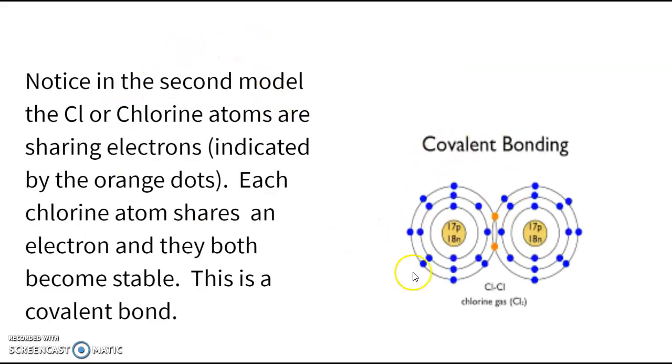If you notice here in this picture, these are two atoms, two chlorine atoms, and in the middle these orange electrons are just being shared between the two atoms so that they are both stable. That sharing of electrons right there is what we call a covalent bond, and this now makes them stable.